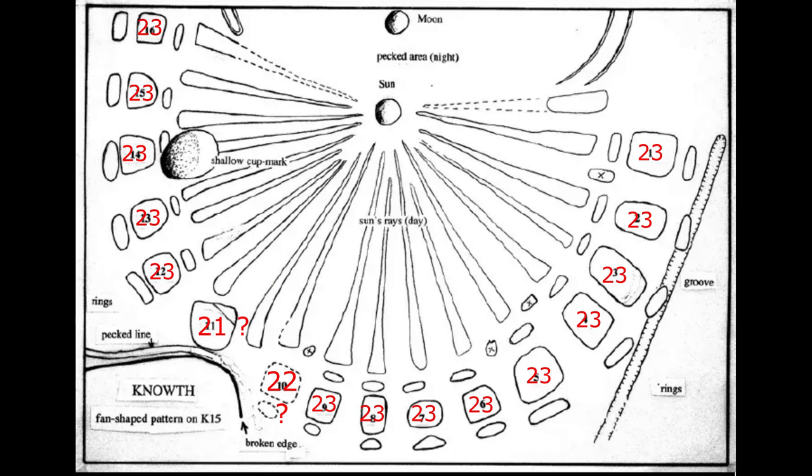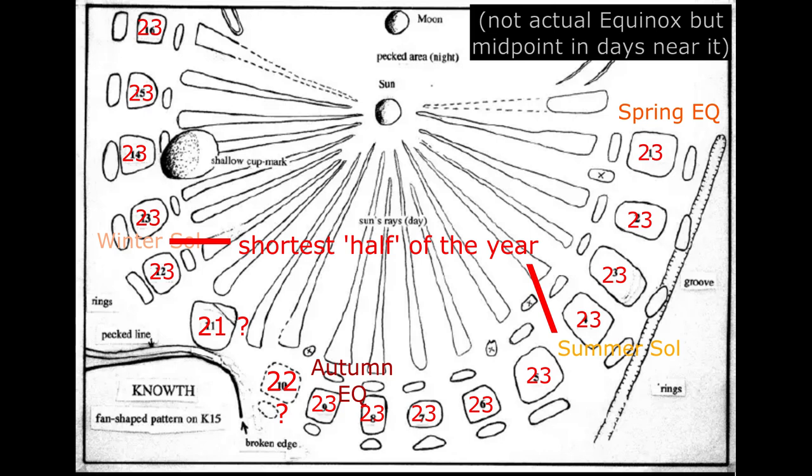He decided the stone matched most closely with Alexander Thom's intervals, by taking the top right area as the spring equinox, and working downward, so that the smaller intervals would be in the shorter part of the year, when the Earth is orbiting slightly faster.